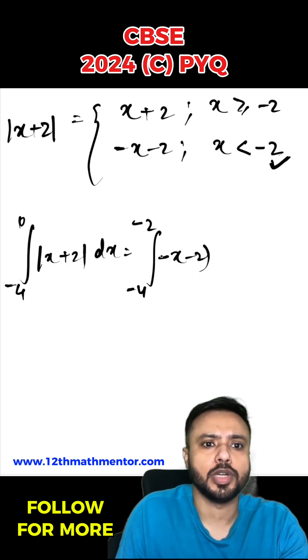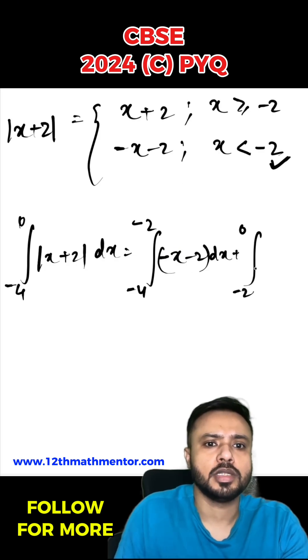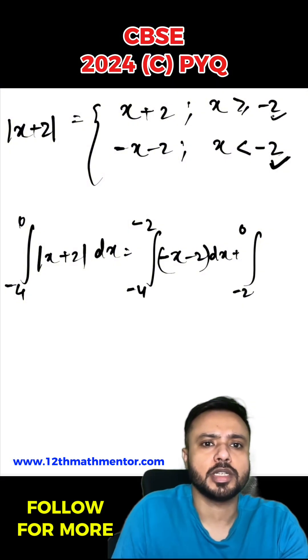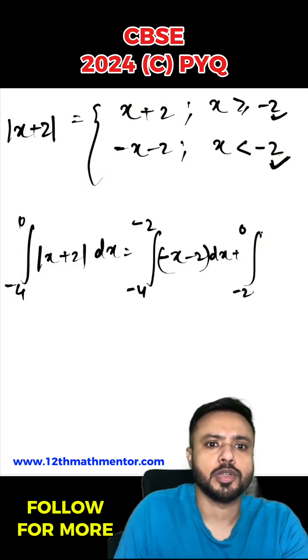Plus negative 2 to 0, and in this range from negative 2 to 0, which comes under x greater than or equal to negative 2, the value of mod of x plus 2 is positive. So I'll write here x plus 2 dx.